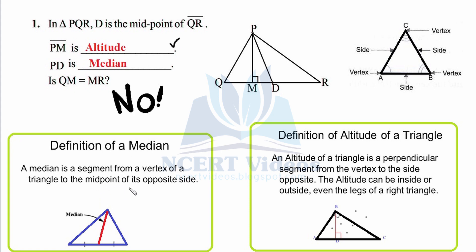For a median, the important thing is the midpoint — that's why the name 'median' relates to 'middle.' As for whether QM equals MR: clearly it does not, because QD equals DR, meaning D is the center point, not M. Since M lies closer to Q, QM is less than MR. So the answer is no.